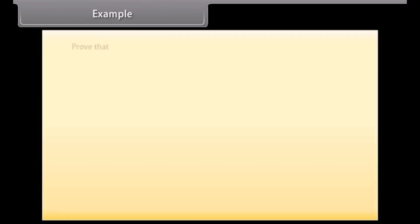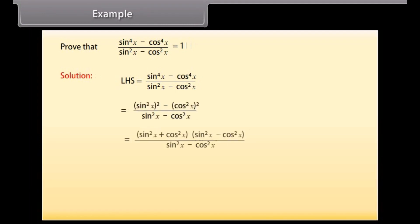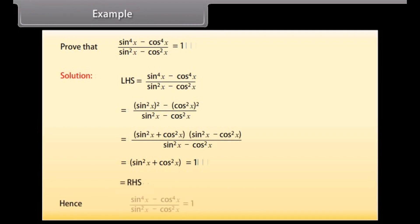Example 2: Prove that (sin⁴ x minus cos⁴ x) over (sin² x minus cos² x) is equal to 1. Solution: Solving the left-hand side, which is (sin⁴ x minus cos⁴ x) over (sin² x minus cos² x), we get 1, which equals the right-hand side.